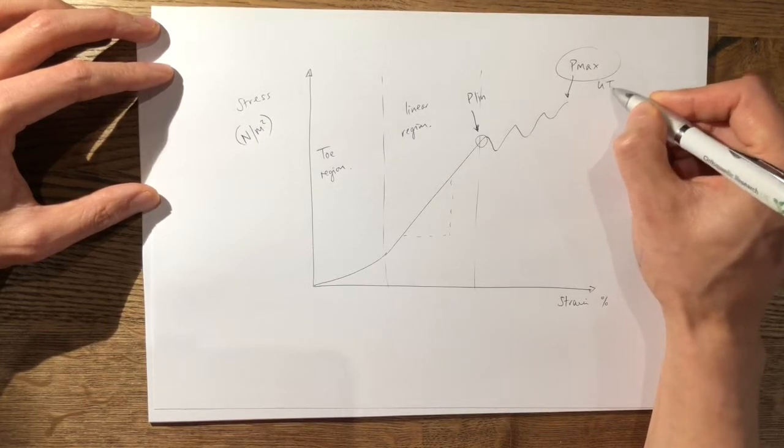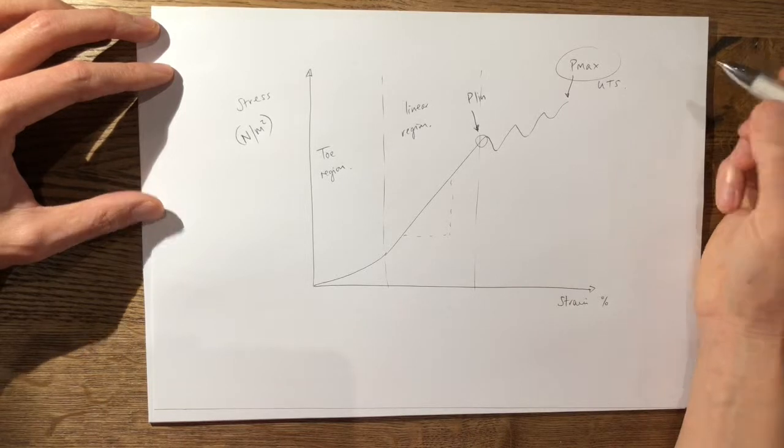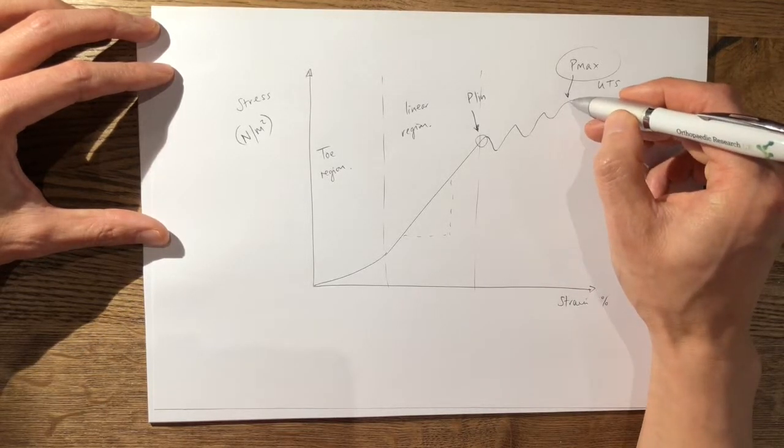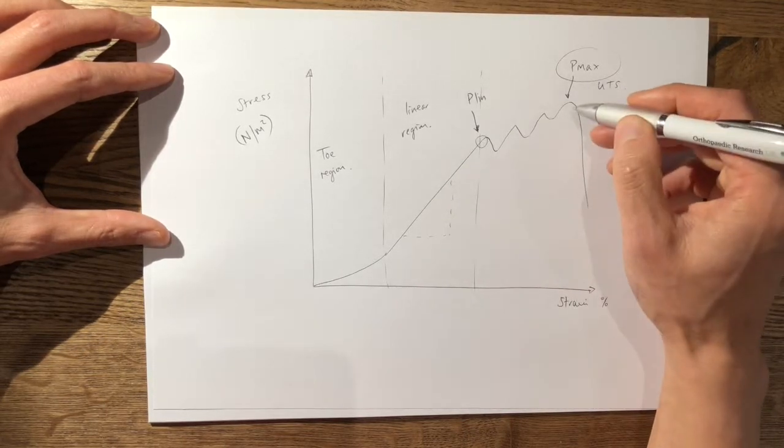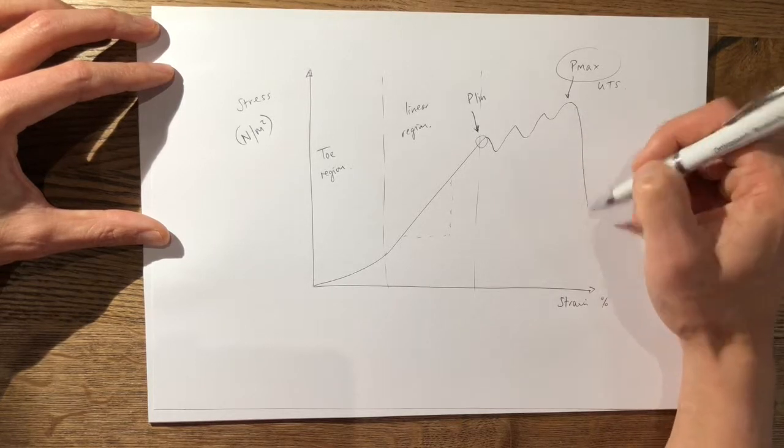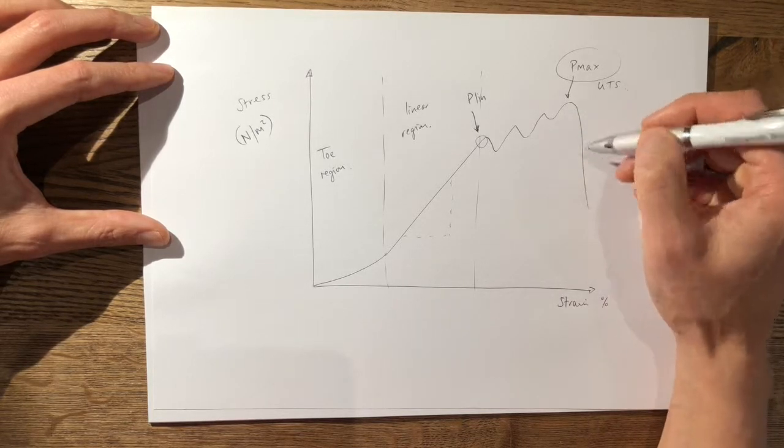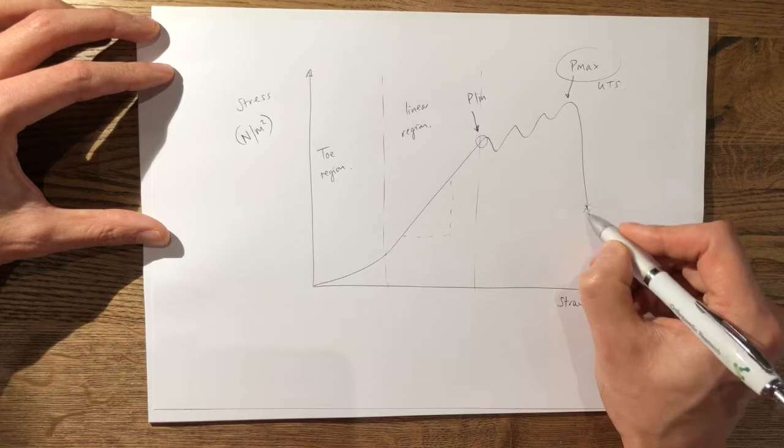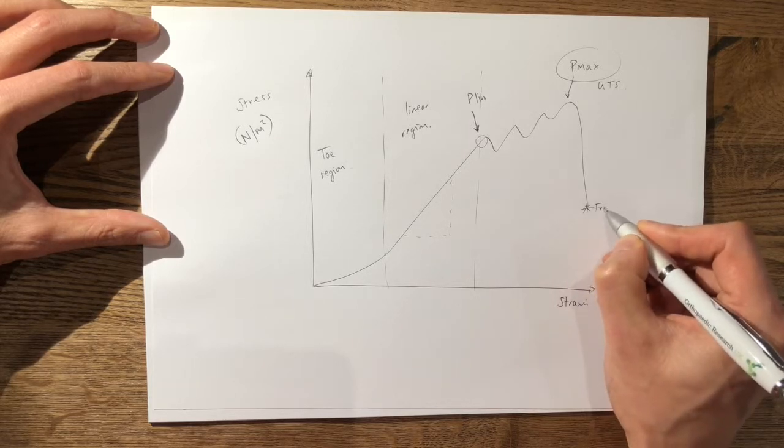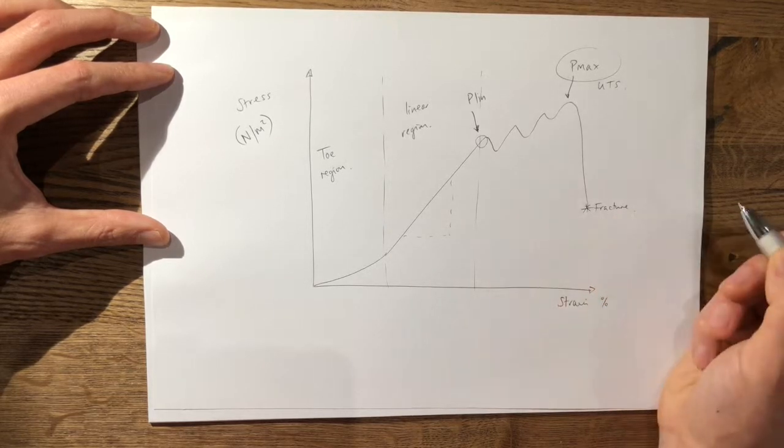So this is also known as the ultimate tensile strength and then you get a rather rapid failure of the whole construct so that will be your necking and then you have failure here or fracture of the tendon.